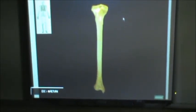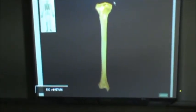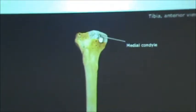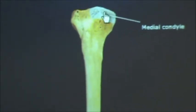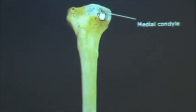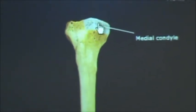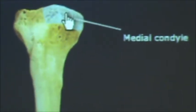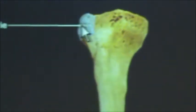This is a video of the anterior view of the tibia and we're going to start off by identifying the condyles. This is the medial side of the tibia, so this is going to be the medial condyle, and laterally to that we have the lateral condyle.